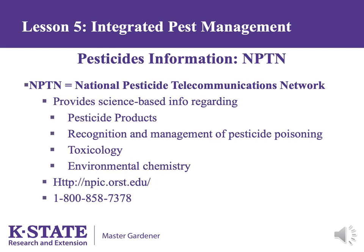The National Pesticide Information Center provides science-based information on pesticides, including specific products, recognition and management of pesticide poisoning, toxicology, and environmental chemistry. The website contains information on specific active ingredients, including how they work and whether they cause cancer, as well as pesticide effects on wildlife. If a pesticide poisoning is suspected, take the person to the hospital immediately, bringing the pesticide container with the label and the hotline number, so that the doctor has everything needed for quick treatment.